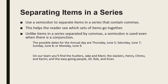For example: 'The possible dates for the annual day are Thursday, June 5th; Saturday, June 7th; Sunday, June 8th; or Monday, June 9th.' Each day and date pair already has a comma inside it, so to separate one item from another we use semicolons. Semicolons are essential here to separate items in a series that already contain commas.